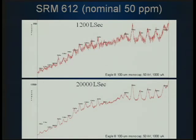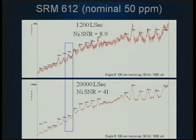Here's an example of SRM 612 with that variety of elements. The top spectrum was collected for 1200 live seconds, the bottom for 20,000. Just by increasing collection time you can greatly increase your signal-to-noise ratio. At 1200 live seconds the signal-to-noise ratio was 8.9, so collecting for 1500 or 2,000 live seconds would most likely have hit the target SNR of 10 needed for initial instrument method parameters.